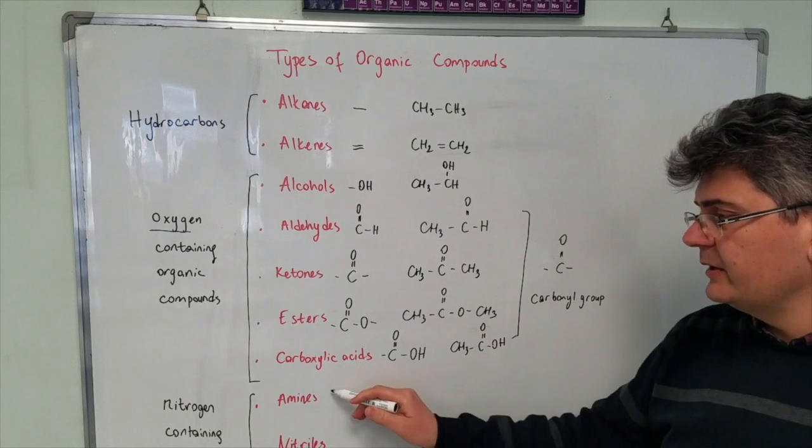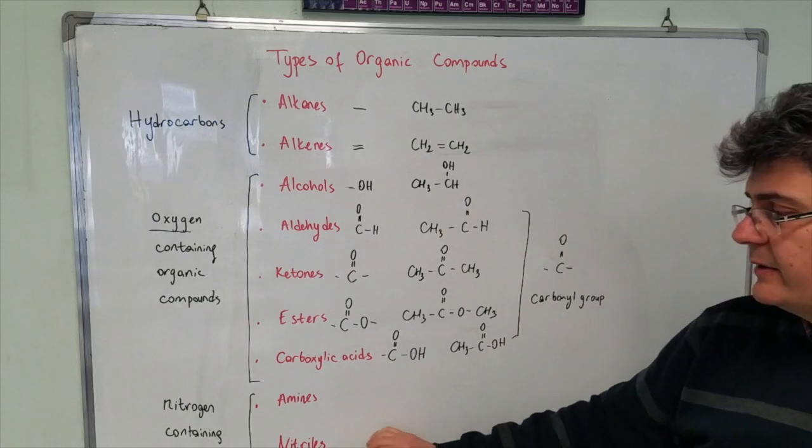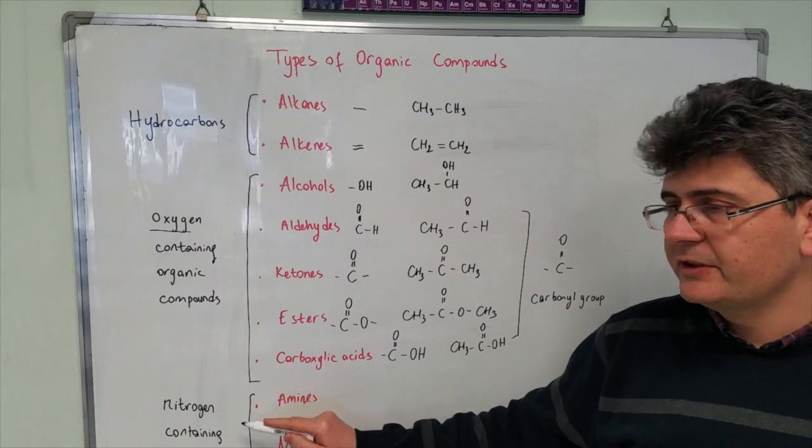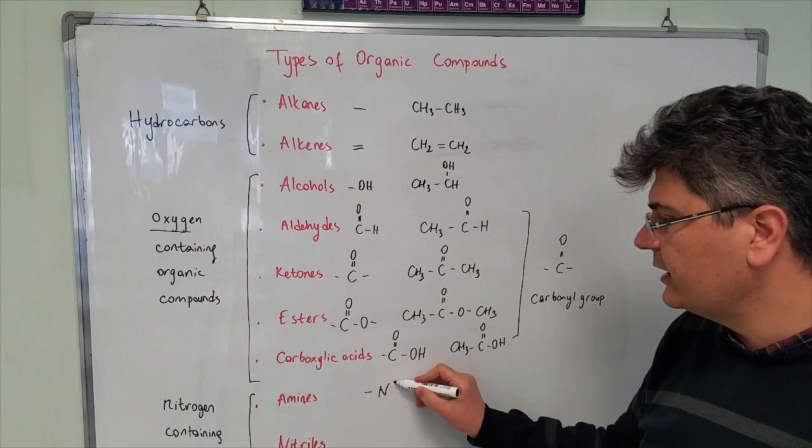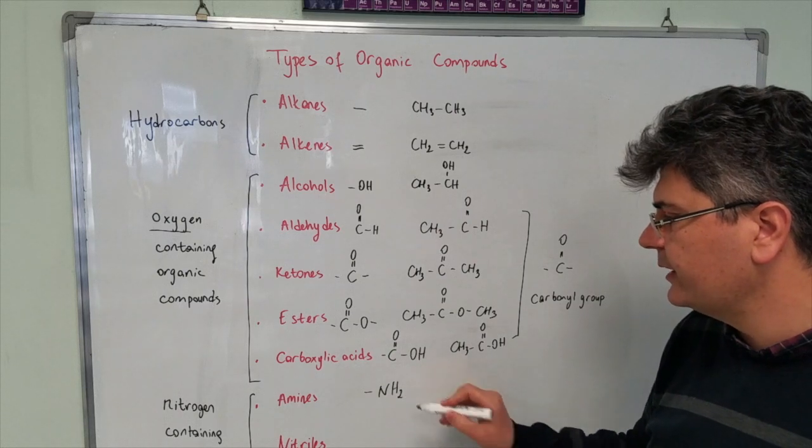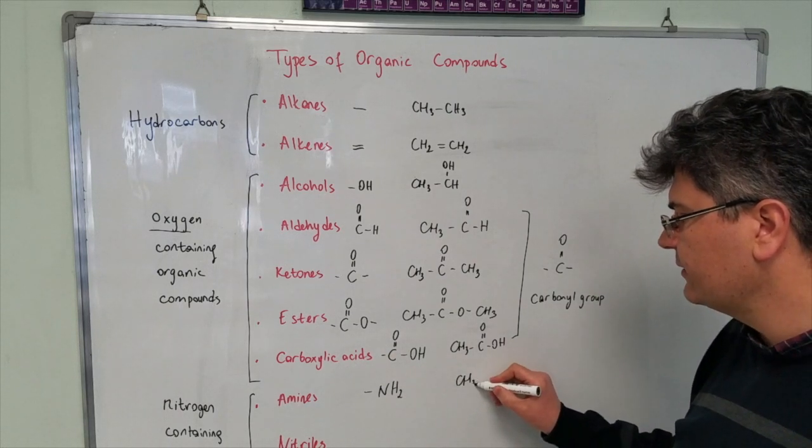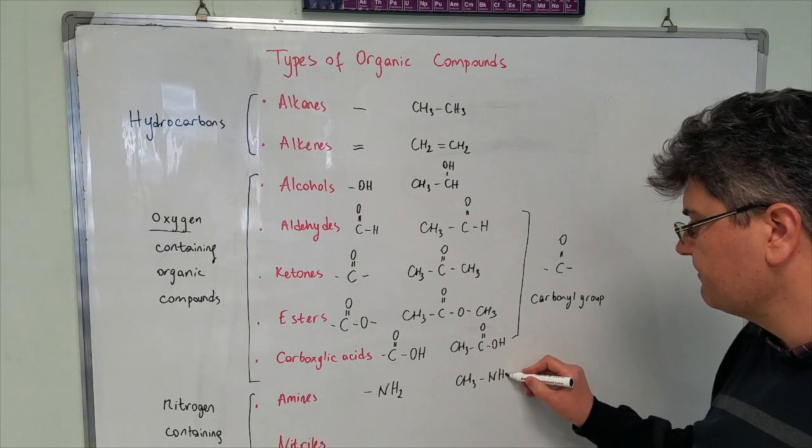Next two are amines and nitriles. These are two examples for nitrogen containing organic compounds. Amines are the ones which contain amino group as a functional group, NH2. Here we have methyl amine.